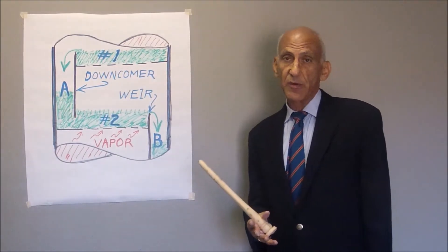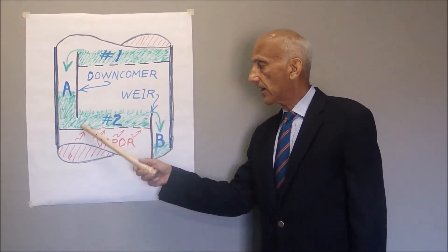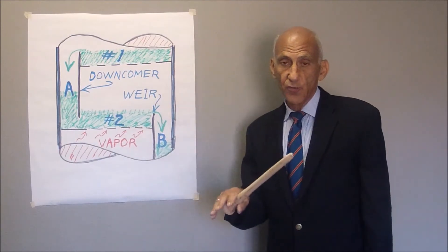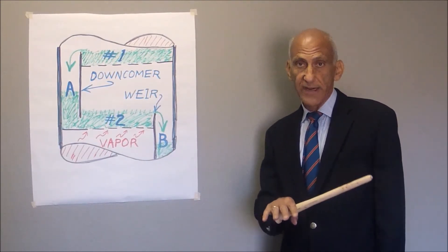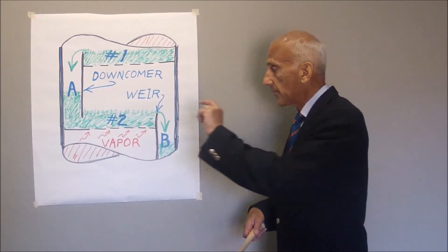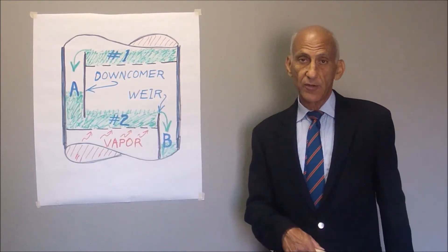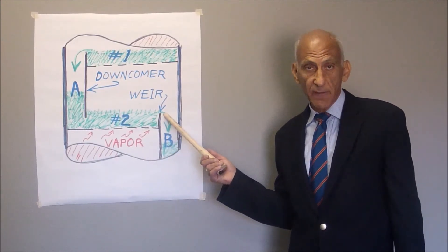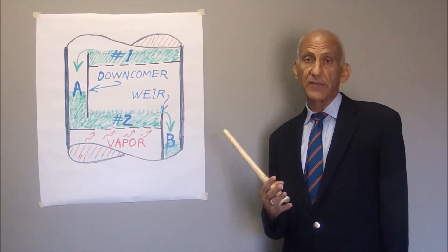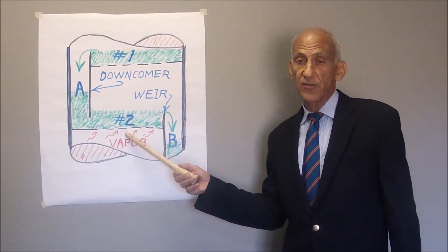But there's a much more serious problem that causes downcomer flooding: if tray deck number two is badly out of level and liquid is leaking through tray deck number two because the pressure drop of the vapor flowing through it is too small — too small to keep the weight of liquid on the tray created by the weir on tray deck number two. So the liquid will all drain down through tray deck number two, and none will overflow the top edge of the weir, making the weir height irrelevant in maintaining the downcomer seal.